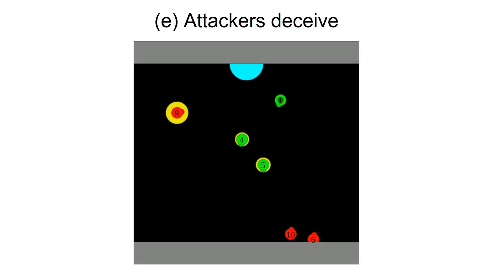When agent nine reached near the fort, agent one finally started paying more attention to the sneaky agent nine but it was too late and the attackers had successfully deceived it.